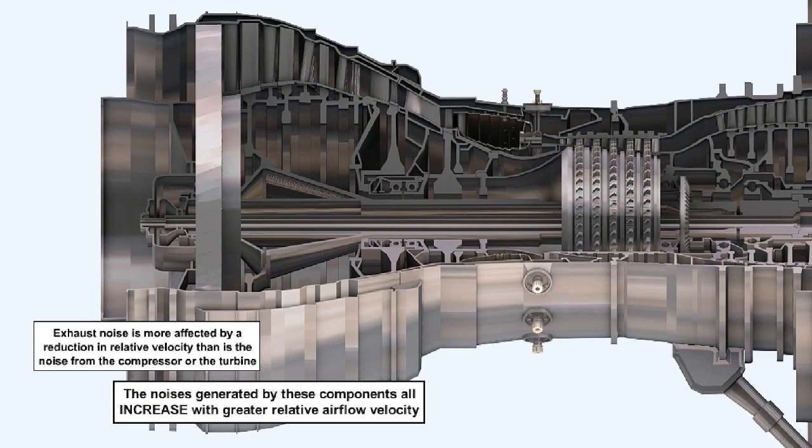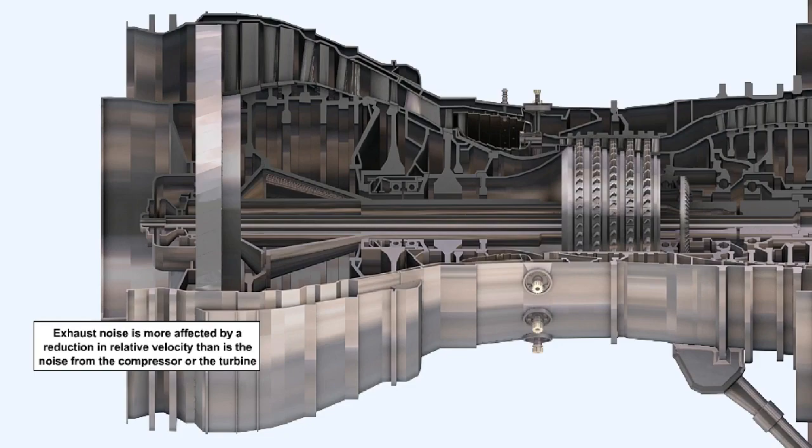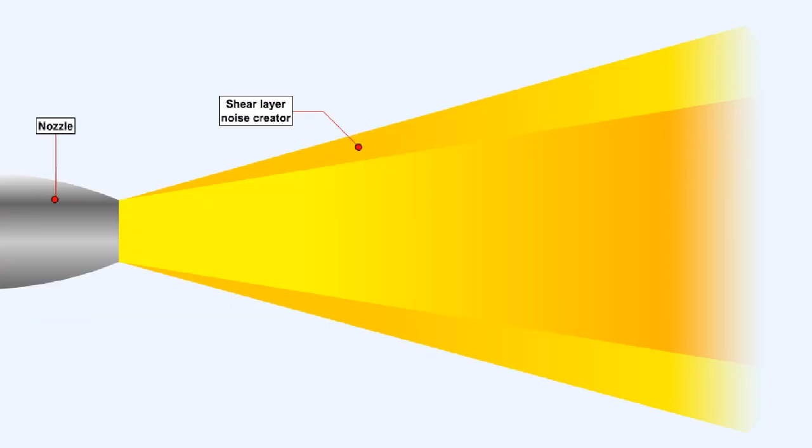The level of noise from the exhaust is more affected by a reduction in its velocity than the noise levels of either the compressor or the turbine are. It's logical therefore to expect that a reduction in exhaust jet velocity would have a stronger influence in reducing noise levels than an equivalent reduction in either compressor or turbine speeds. The relative speed difference between the exhaust jet and the atmosphere into which it is thrusting causes a shearing action. The shearing action in turn creates a violent and extremely turbulent mixing pattern.